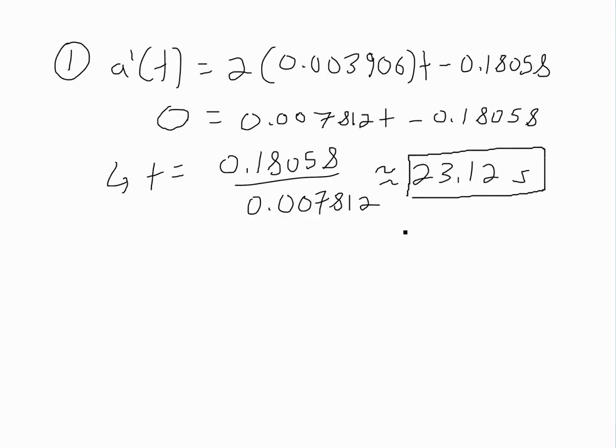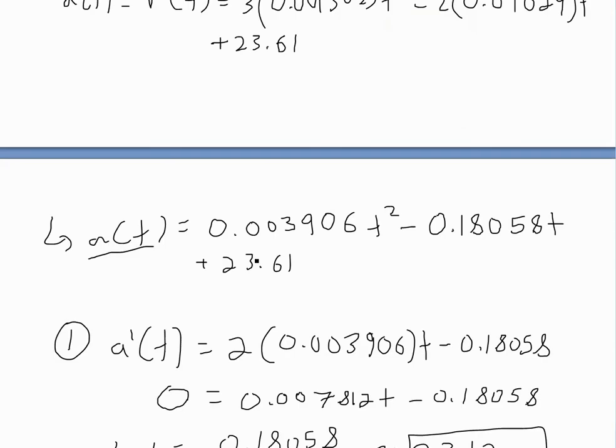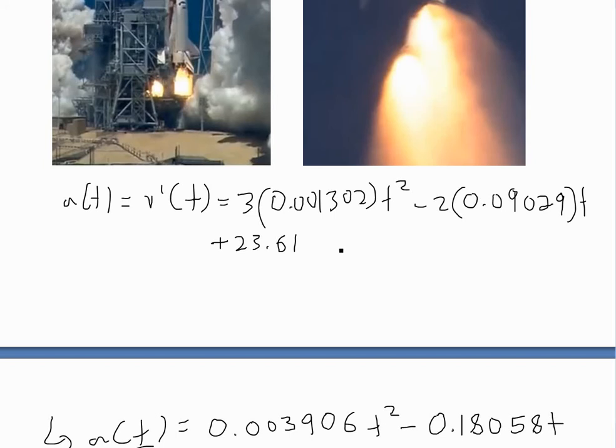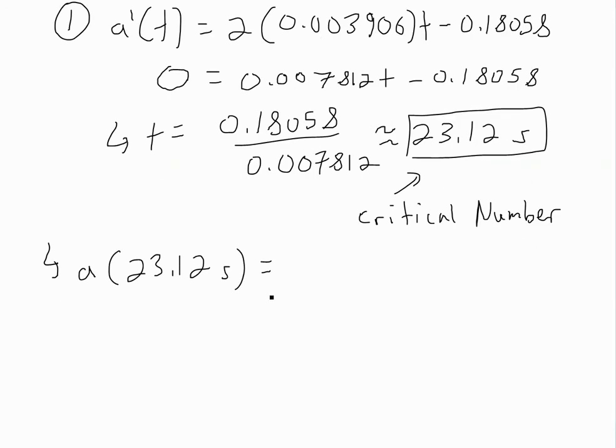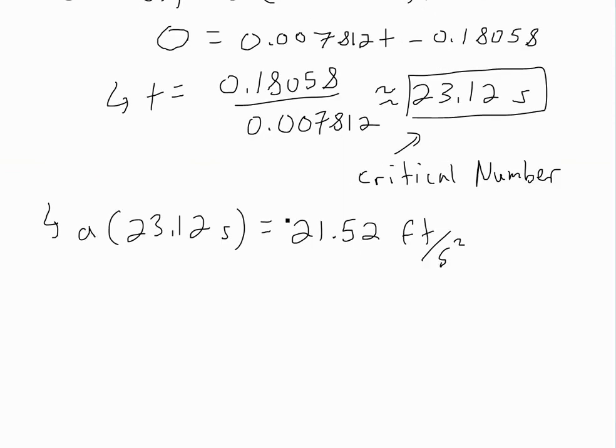So this is a critical number. Now we can plug this number into our acceleration function. So a(23.12) would equal, if you plug it into this function using your calculator, we'll get 21.52 feet per second squared—the units for acceleration.